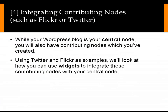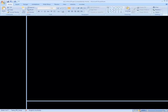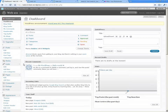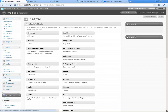Okay, the final thing I really want to look at is integrating contributing nodes such as Flickr or Twitter. While we've got our WordPress blog set up — our pages, posts, and theme — this is our central node, but we will also have contributing nodes: other Web 2.0 tools that expand our web presence. I'm going to use two examples, Twitter and Flickr, to see how we integrate these other services back onto our main web presence page.